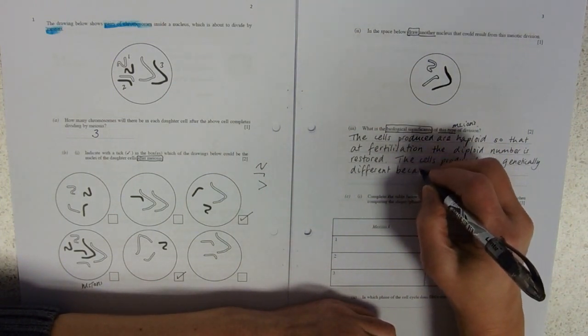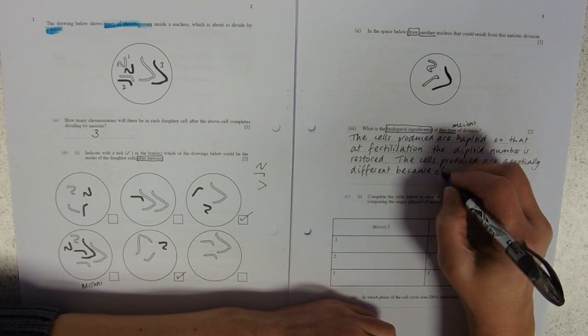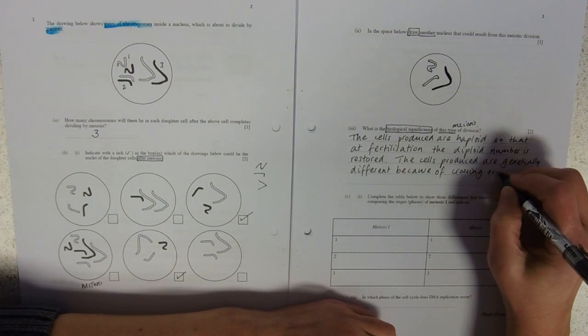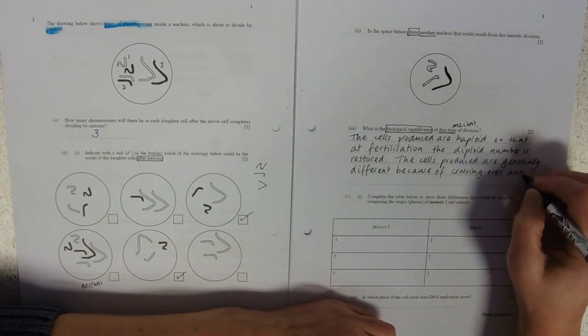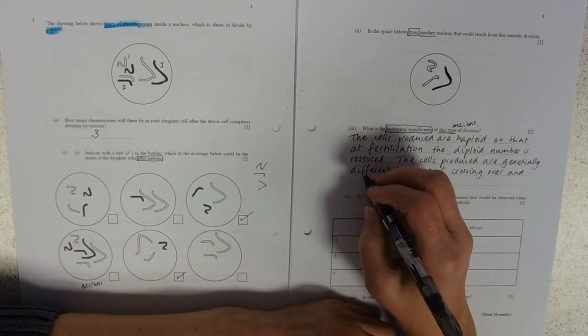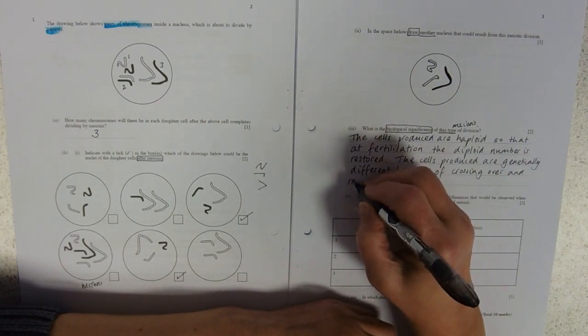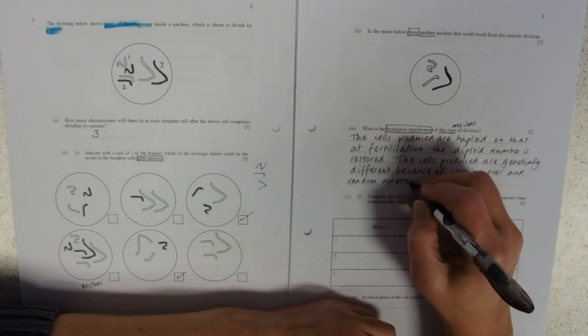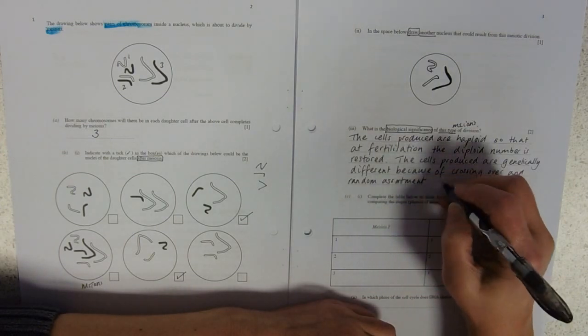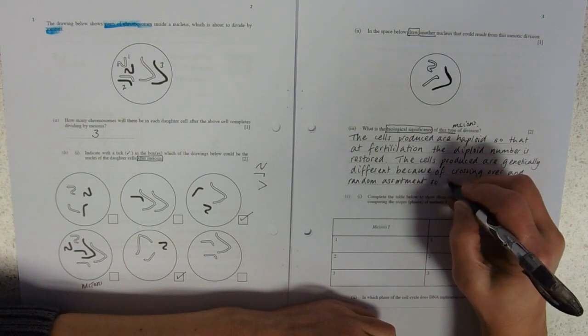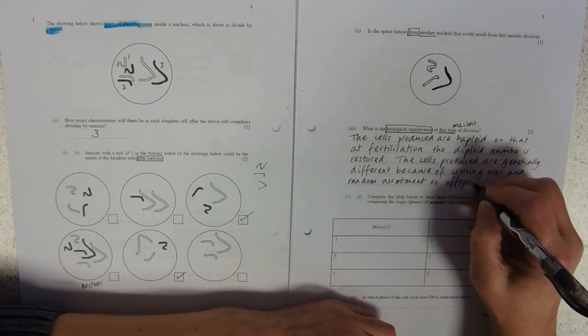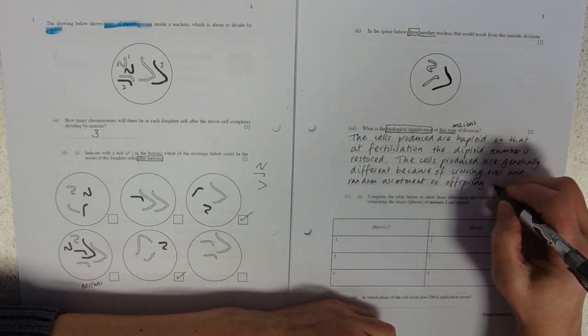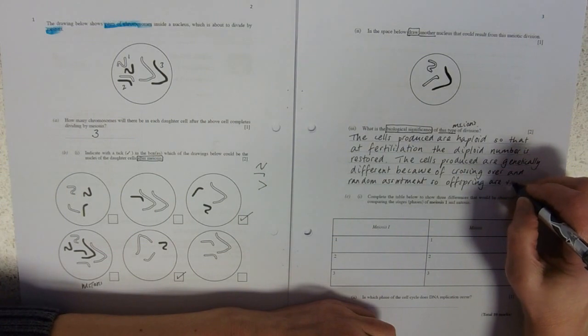Different because of crossing over and random assortment. So offspring are varied.